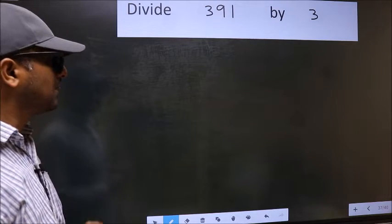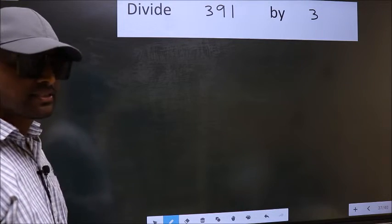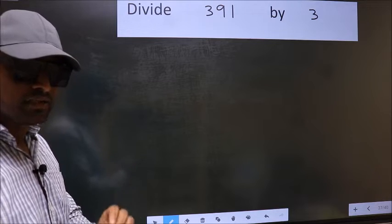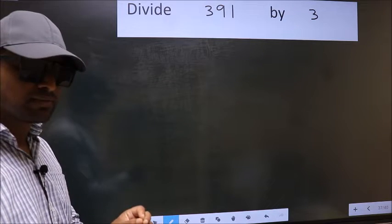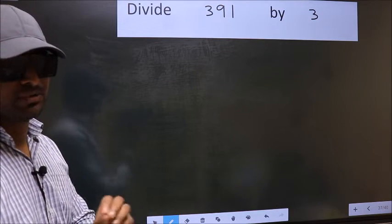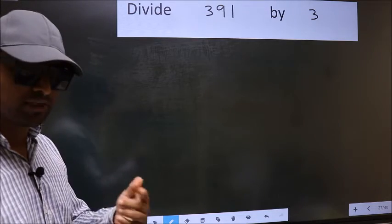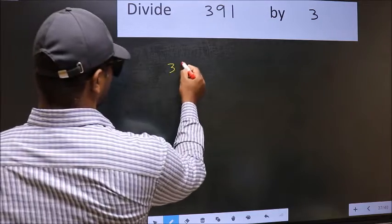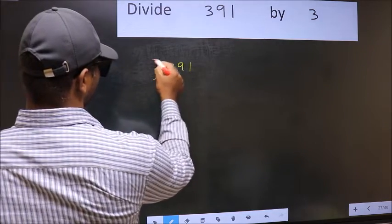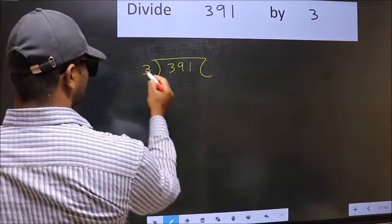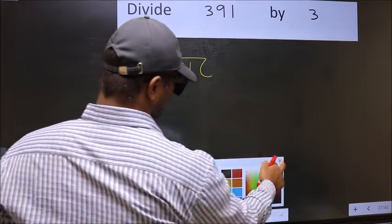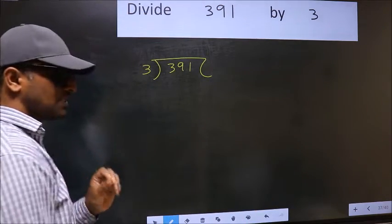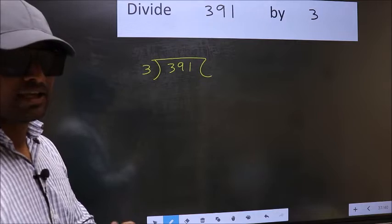Divide 391 by 3. While doing this division, many do this mistake. What is the mistake that they do? I will let you know. But before that, we should frame it in this way. 391 and 3 here. This is your step 1. Next.